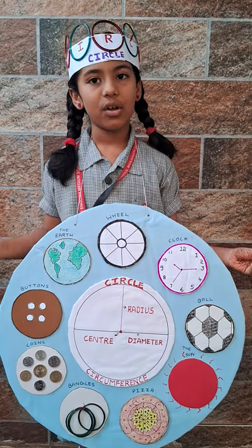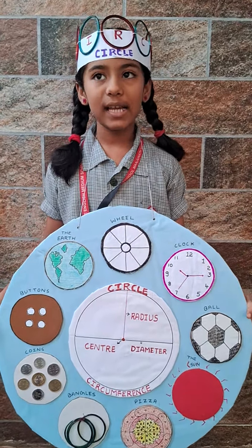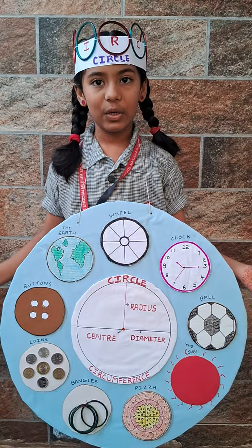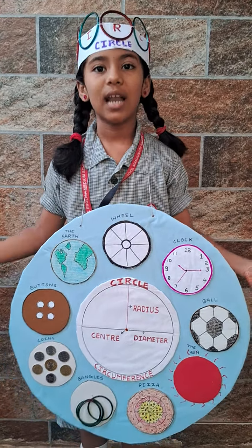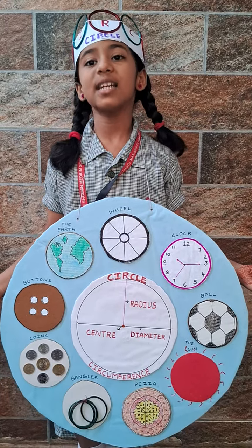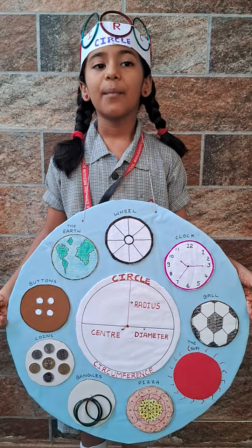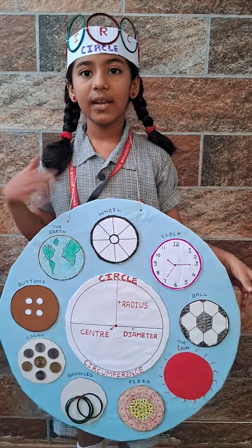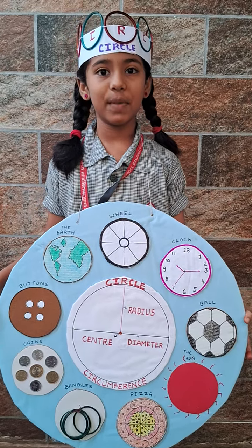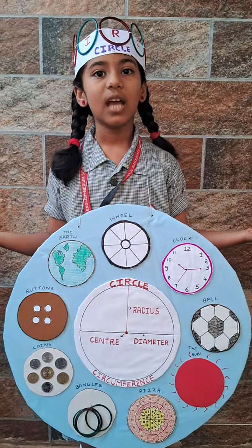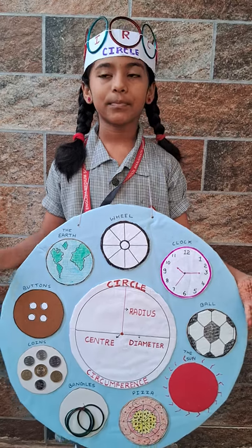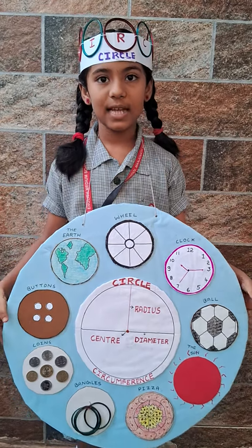You can find my shape in things like wheels, tires, bangles, coins, rings, hula hoops, glasses, cap of the bottle, plates and magnetic compass.